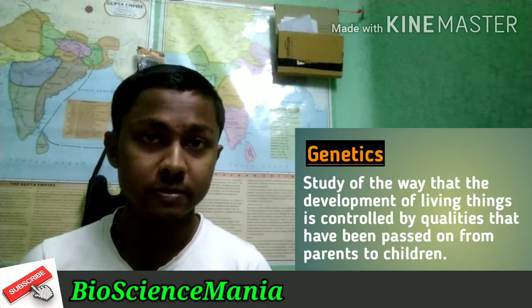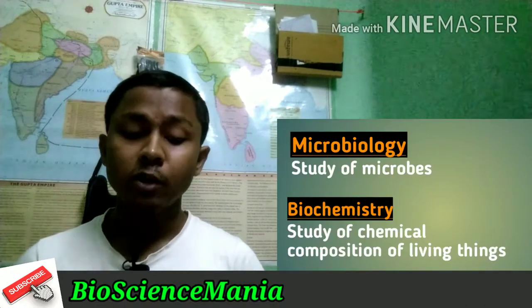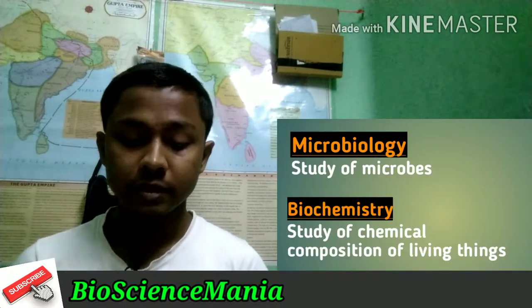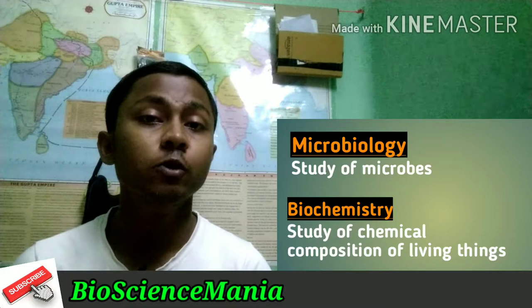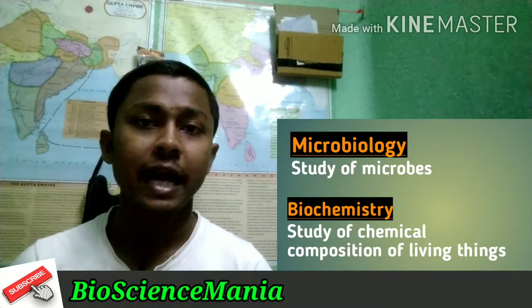Next we talk about genetics. Genetics is the study of the way that the development of living things is controlled by qualities that have been passed on from parent to children. Next, microbiology is the study of microbes, and this is called microbiology.